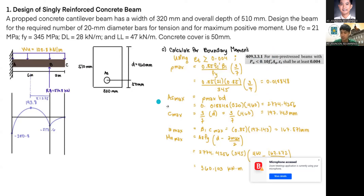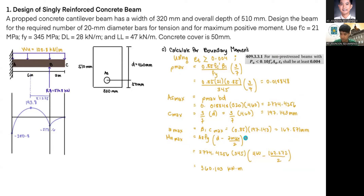We calculate AS_max using ρ_max × b × d, giving 2,774.4256 mm². For C_max, using the formula (d × 3/7), we get 197.143 mm. For A_max = β1 × C_max = 167.571 mm. For M_n_max, using AS × Fy × (d − A_max/2), where d = 510 − 50 = 460 mm, we get 360.103 kN·m.